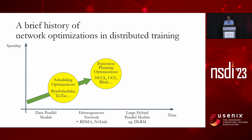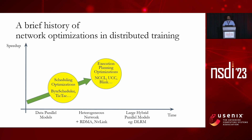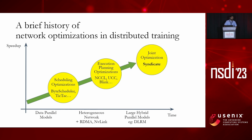Over time, models got more and more complex. The types of parallelism evolved to include data parallelism, model parallelism, fully sharded data parallelism, and multiple sorts of hybrid parallelism. These models became not just compute bound, but memory bound or even network bound. You could use existing scheduling optimizations and execution planning optimizations, but these two research threads looked at them in isolation. They do speed up large hybrid parallel models, but there is significant speedup to be had by doing joint optimization — which brings me to Syndicate.